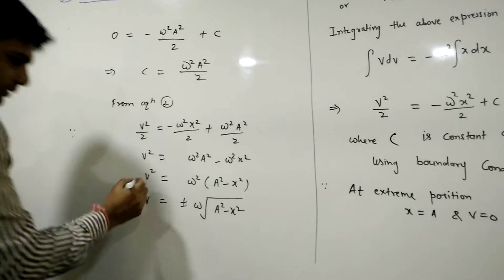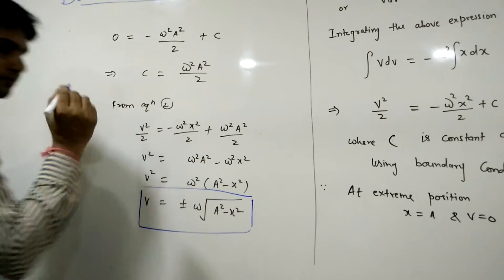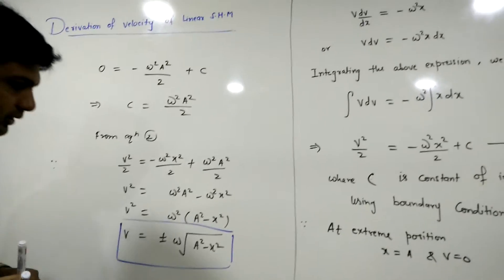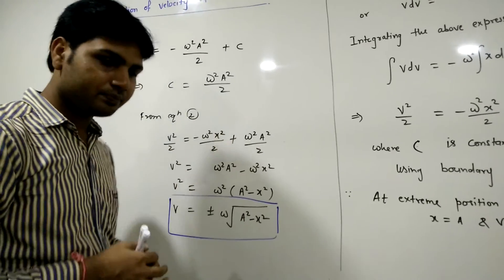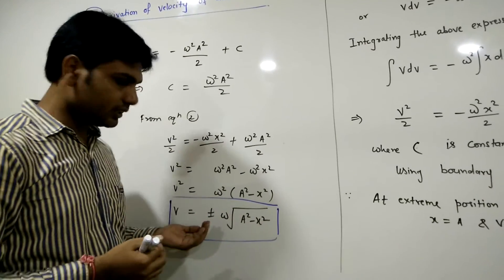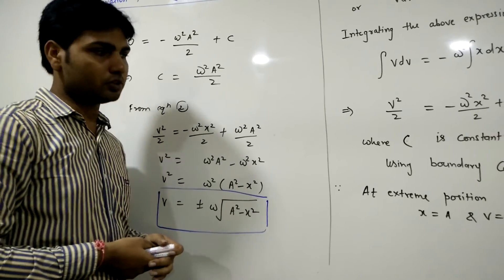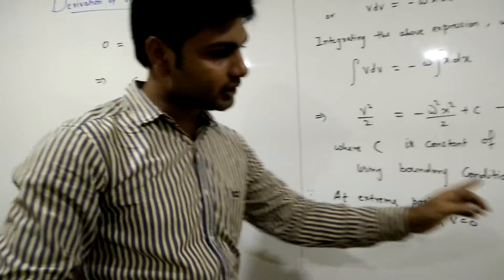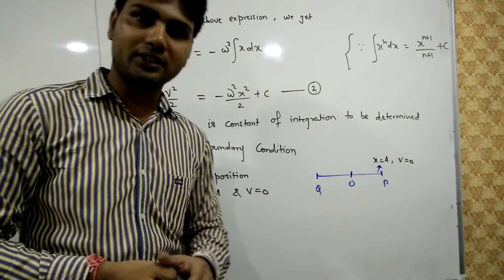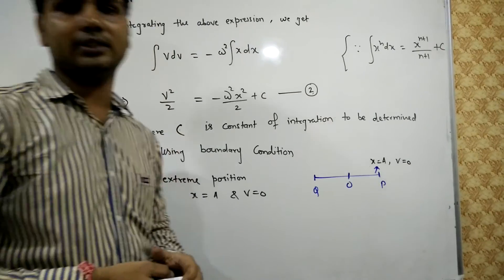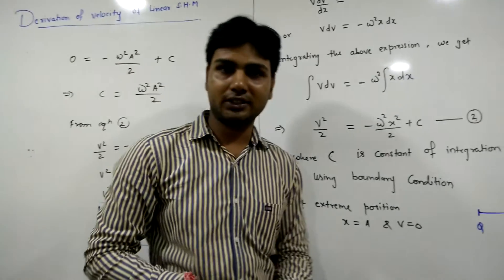This is the expression for the velocity of linear SHM. The plus and minus signs represent that velocity is minimum on both sides of the extreme position — that is, at both the positive and negative extremities, the velocity is minimum. Thanks for watching this video.